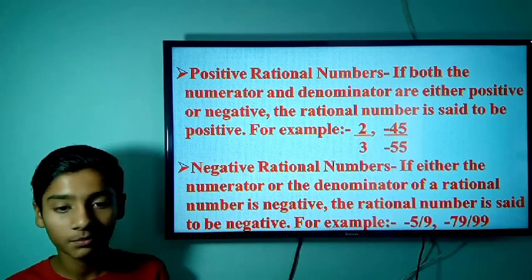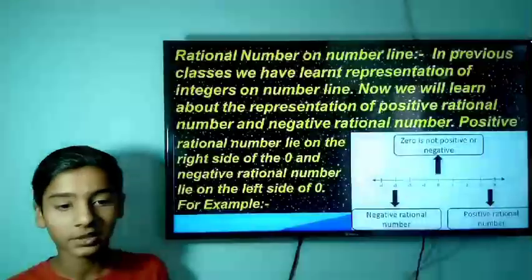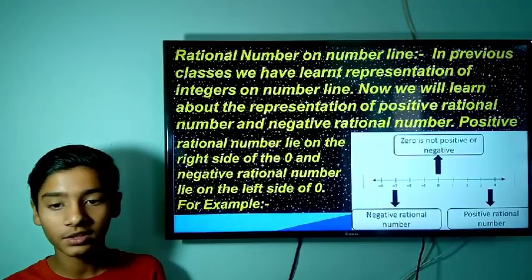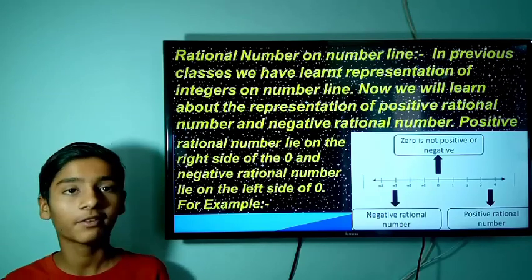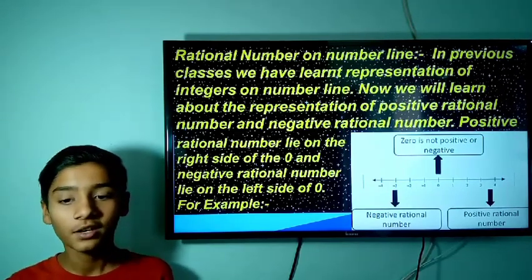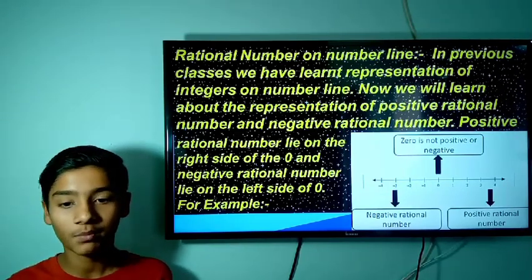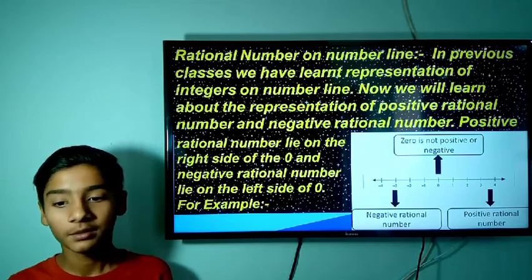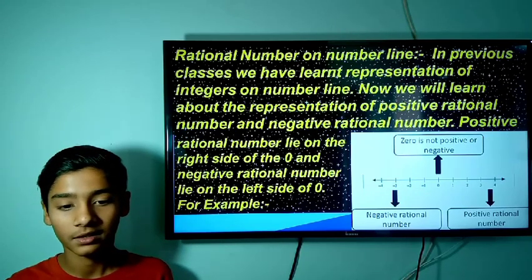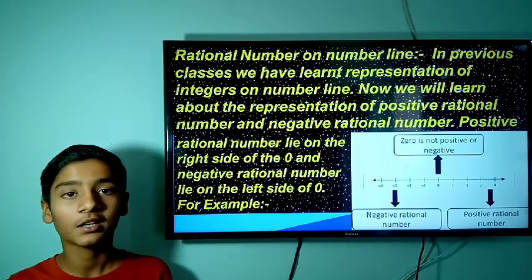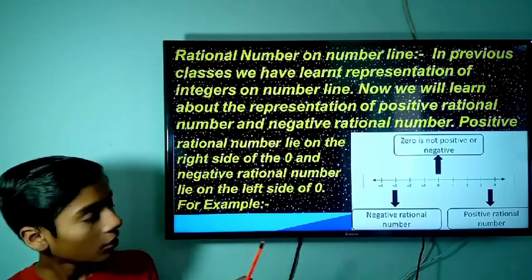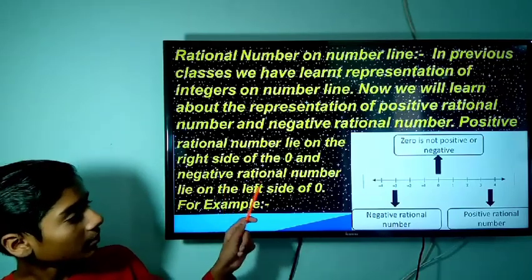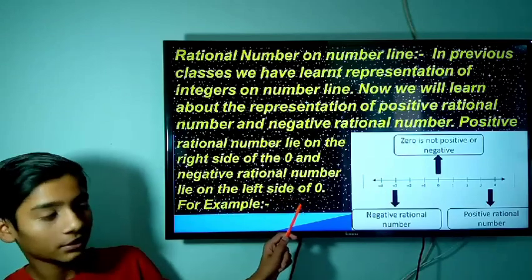Let's proceed with Representation of Rational Numbers on the number line. In previous classes, we learned representation of integers on the number line. Now we will learn about positive and negative rational numbers on the number line. Positive rational numbers lie on the right side of 0 and negative rational numbers lie on the left side of 0.